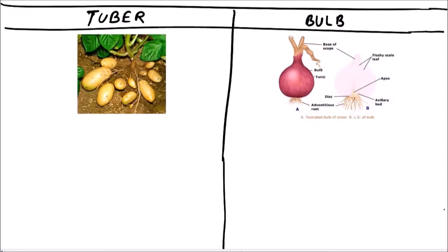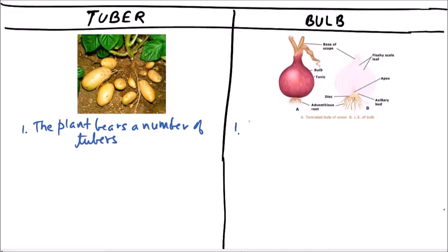Welcome to Studio Biology. In this video we are going to discuss the difference between tuber and bulb. First of all, a plant bears a number of tubers, while a plant develops only a single bulb.